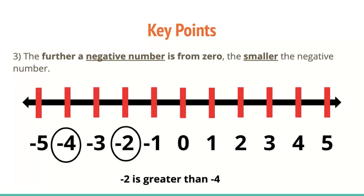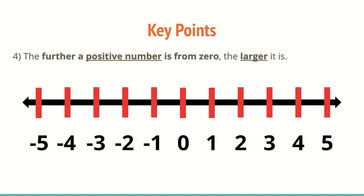So on the flip side, negative two is actually greater than negative four. You could have also said that negative four is smaller than or less than negative two. On the flip side, the further a positive number is from zero, the larger it is. So these are numbers that we're used to. So if we looked at the number one and we looked at the number five, we know that five is greater than one. The further to the right, the larger the number, the further to the left, the smaller the number.